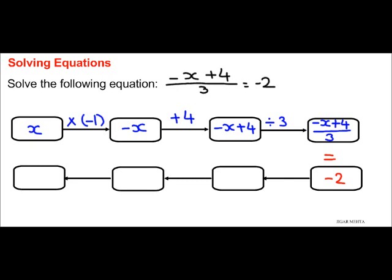Now opposite of divide by 3 is multiply by 3. So -2 times 3 is -6, which means -x + 4 equals -6.